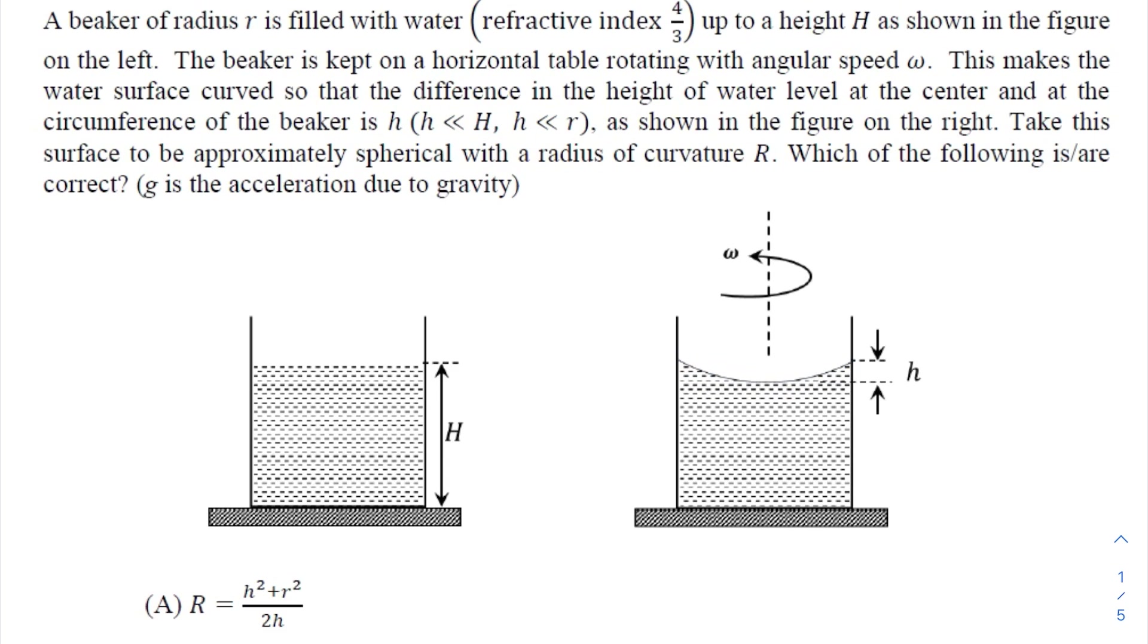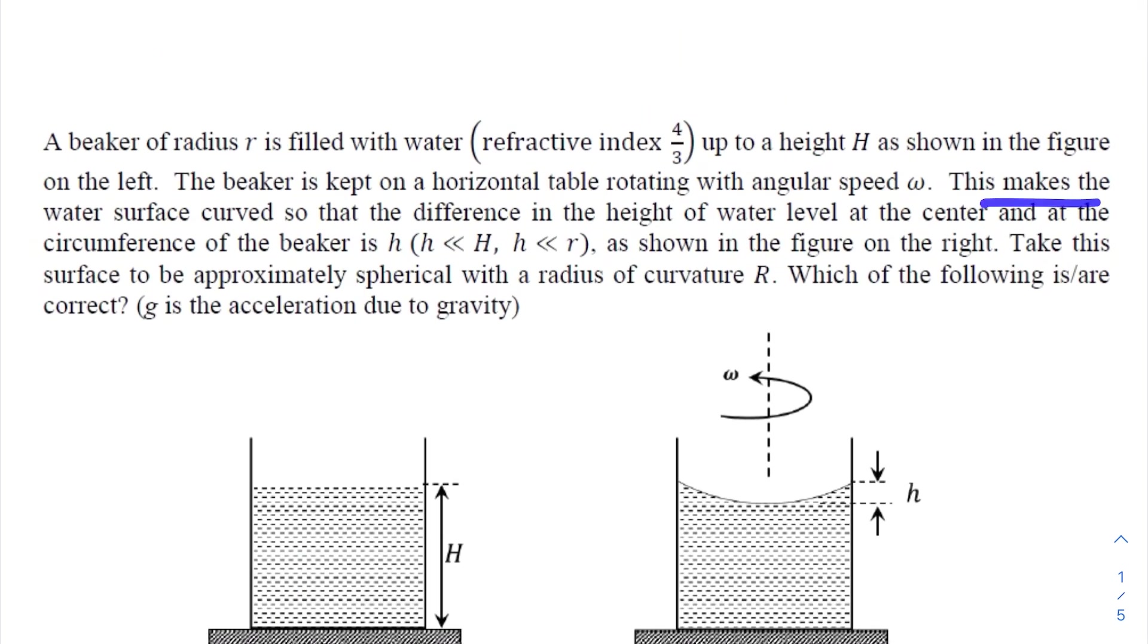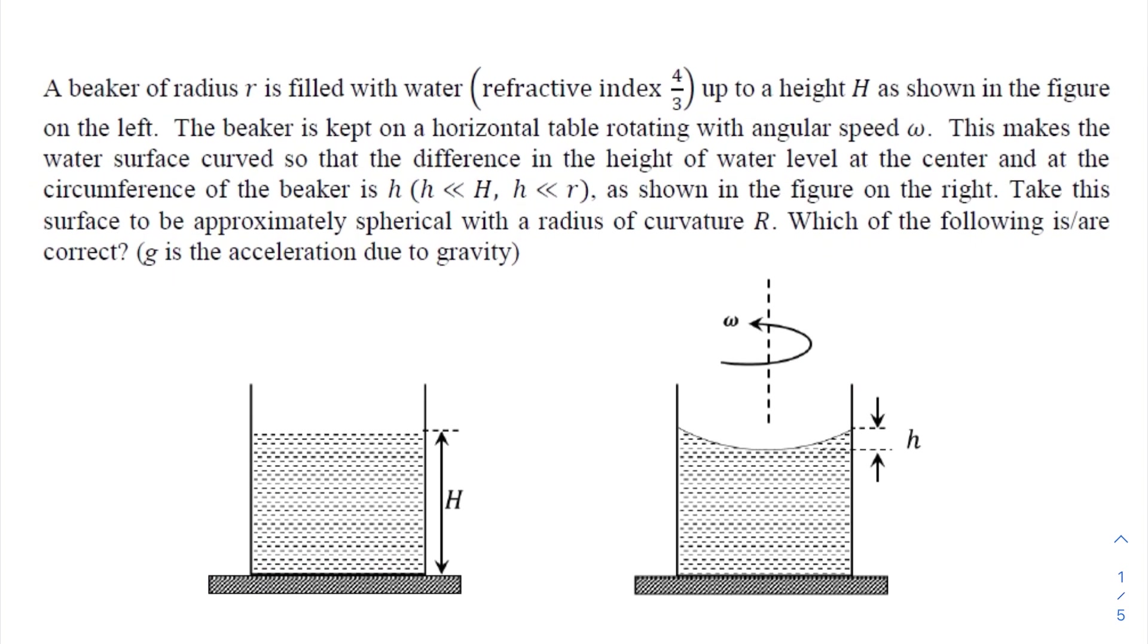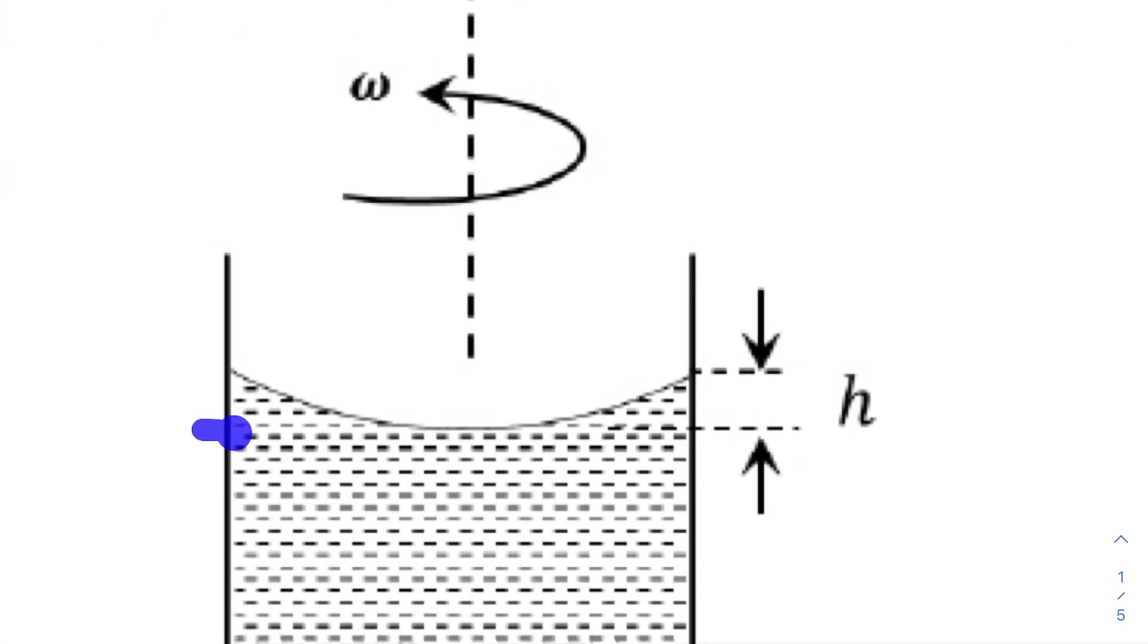...and at the circumference of the beaker is small h. So the difference of height here and here will be small h. Now few approximations have been provided: small h is very much less than capital H, and small h is very much less than radius of the cylinder also. As shown in the figure on the right...